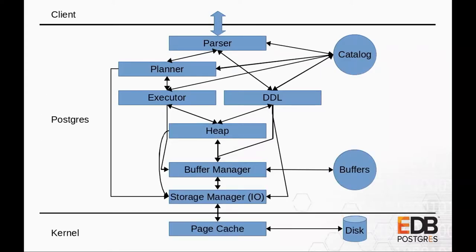What did we have to do? Here's a diagram representing which subsystems interact when a query is processed. The client sends a query to the parser, which sometimes queries the catalog. For DDL, it goes to a DDL subsystem. For normal queries, the planner builds a plan and hands it to the executor. The executor sometimes accesses the heap, sometimes does index accesses, and so on. The heap internally accesses the buffer manager. The buffer manager goes to the storage manager, which may read data from disk or find it in shared buffers. If not in shared buffers, it goes to the OS, which may already have the data or must read from disk.